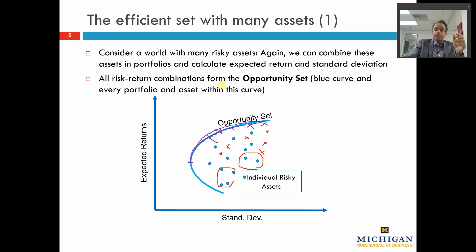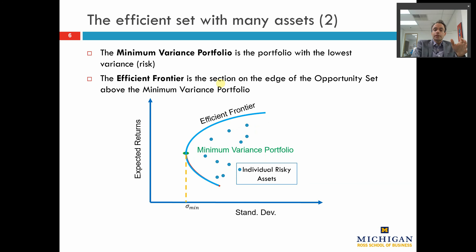The efficient frontier is the suite of portfolios which offers the highest expected return for a given level of risk. That is the only set of portfolios that rational investors would actually purchase, and you can see that on this next chart.